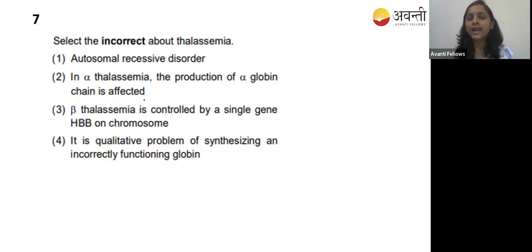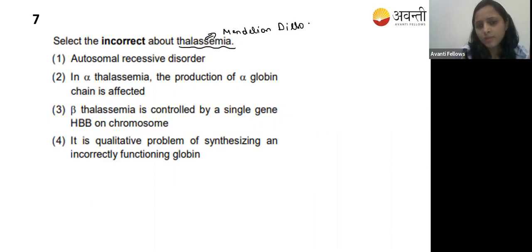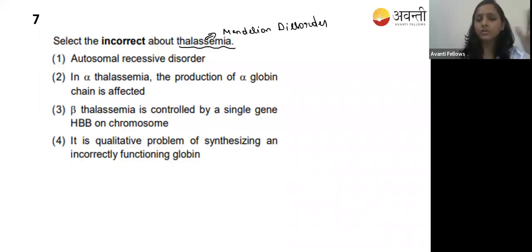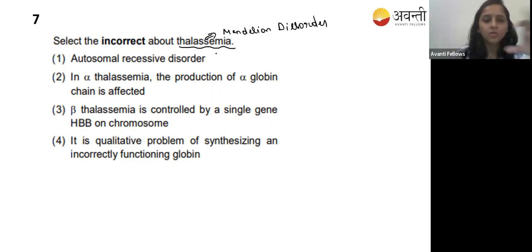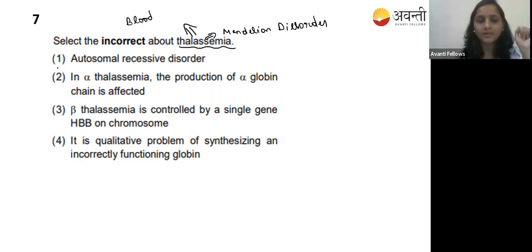Seventh question: select the incorrect statement about thalassemia. Thalassemia is a Mendelian disorder - a blood disease. If any mutation happens in a gene and is transmitted to the next generation, that is a Mendelian disorder. Option one - autosomal recessive disorder - yes, thalassemia is an autosomal recessive disorder. That is a correct statement.